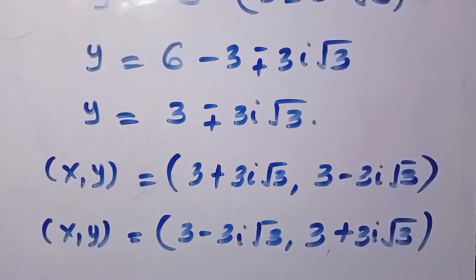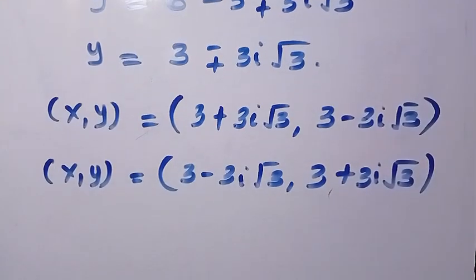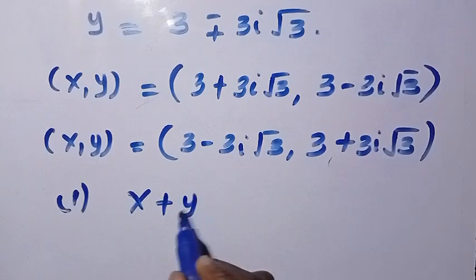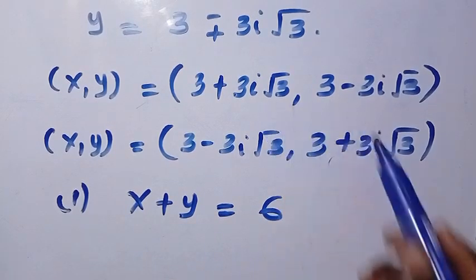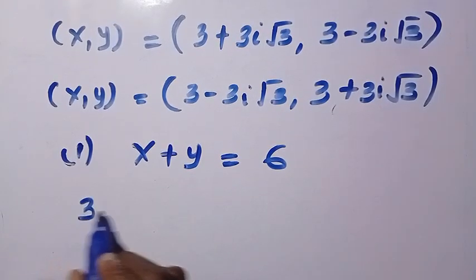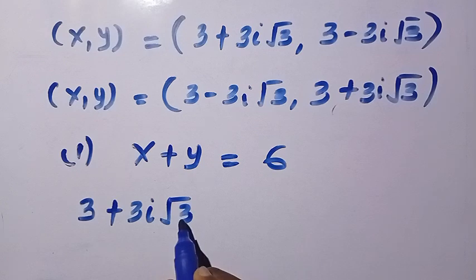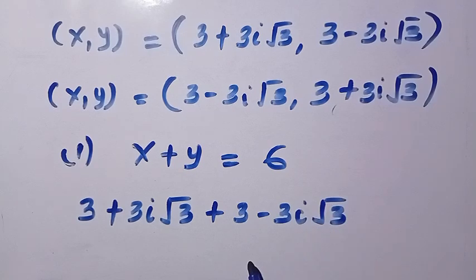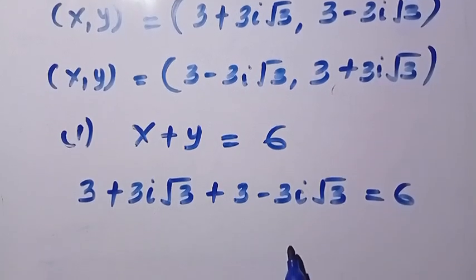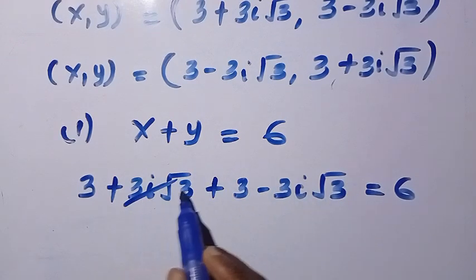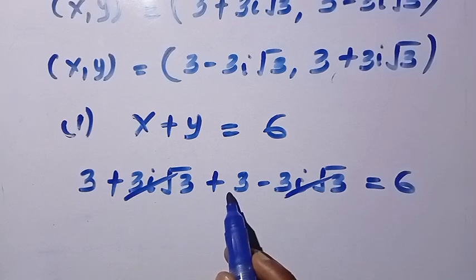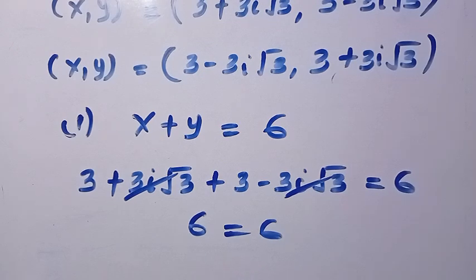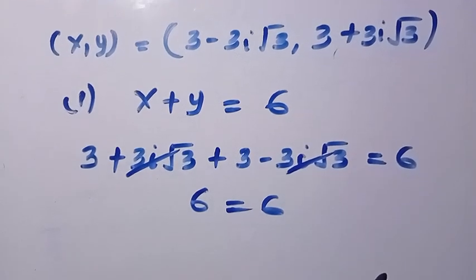To verify, we check equation 1: x plus y equals 6. Testing the first pair: (3 plus 3i√3) plus (3 minus 3i√3) — the imaginary terms cancel, and 3 plus 3 gives us 6. So 6 equals 6. The second pair gives the same result.